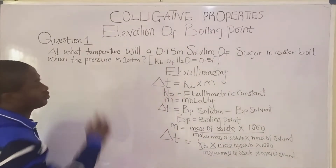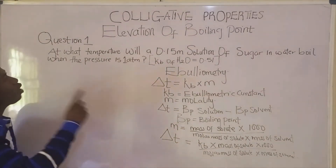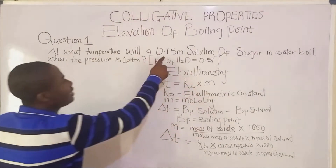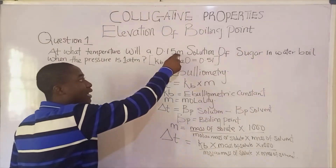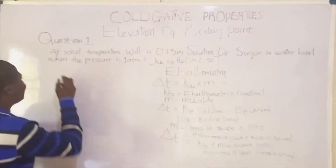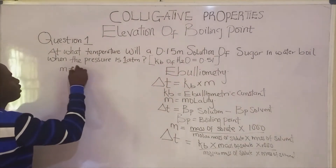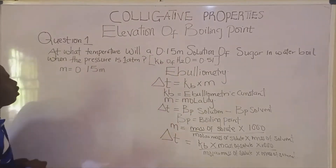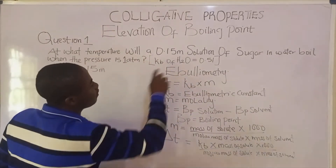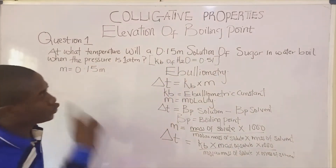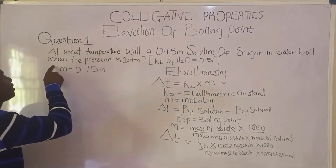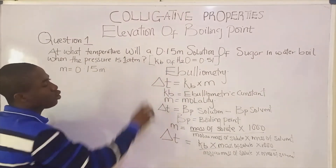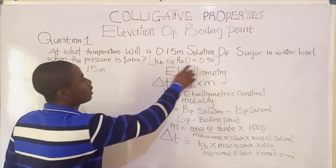Let's move to the first question. The question says: at what temperature will a 0.15 molal solution of sugar in water boil? The KB of water, the ebulliometric constant, equals 0.51. We note that molality M is 0.15 and we need to find the boiling point of the solution.